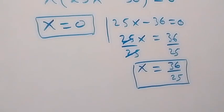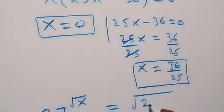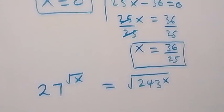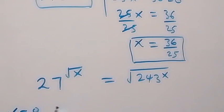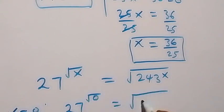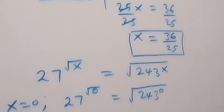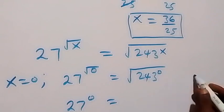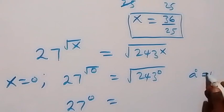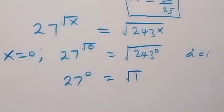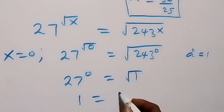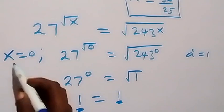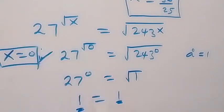Let's check using what is given: 27 raised to power root x equals root 243 raised to power x. For x equals 0, substituting gives 27 raised to power root 0 equals root 243 raised to power 0. Root 0 is 0, so we have 27 raised to power 0, which is 1, equals 243 raised to power 0, which is also 1. Any number to the power 0 is 1, so root 1 equals 1. Left hand side equals right hand side. Hence x equals 0 satisfies this given problem.